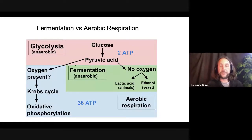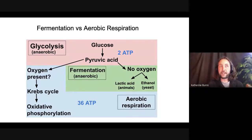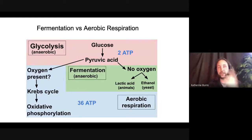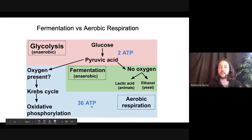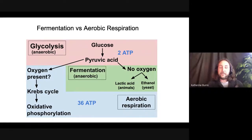This is the stage at which fermentation gets divided off from aerobic respiration. What we learned last week: pyruvic acid goes to the mitochondria if oxygen is present, goes through the Krebs cycle and the electron transport chain, drives the ATP synthase, and makes a whole bunch of ATP. That's only possible if you have oxygen, and I'll explain why in a minute.